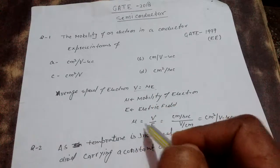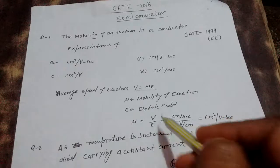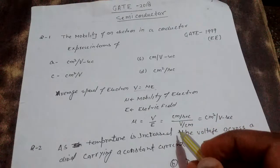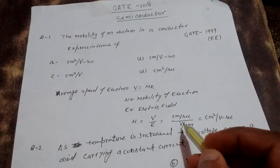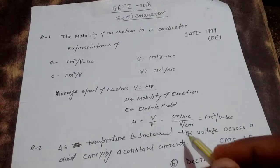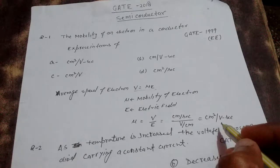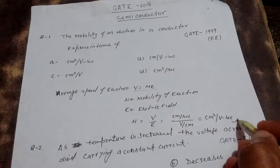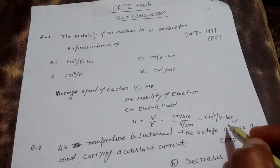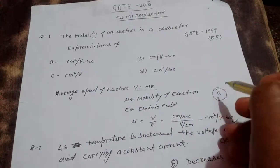From V = μE, we can say that μ is equal to velocity upon electric field. The unit of velocity is centimeter per second and the unit of electric field is volt per centimeter. Putting these in, we get the unit of mobility as centimeter square per volt second. So option A is correct.